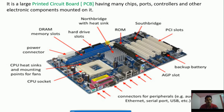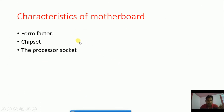To summarize: a motherboard is a large printed circuit board having many chips, ports, controllers and other electronic components mounted on it. It is a PCB - a printed circuit board - on which different electronic components and ports and controllers are placed. Now moving to the next slide - characteristics of the motherboard.